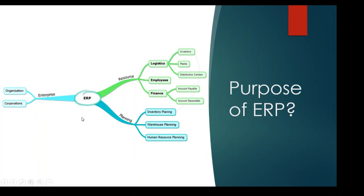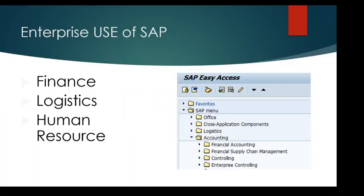SAP handles enterprise-related information including logistics, human resources, and finance. Any enterprise has three or four major areas: finance, logistics, and human resources. As we can see on the right-hand side, the SAP Easy Access menu shows the main screen with logistics and accounting. Under accounting, we can see financial accounting and supply chain management — these different areas are called modules.